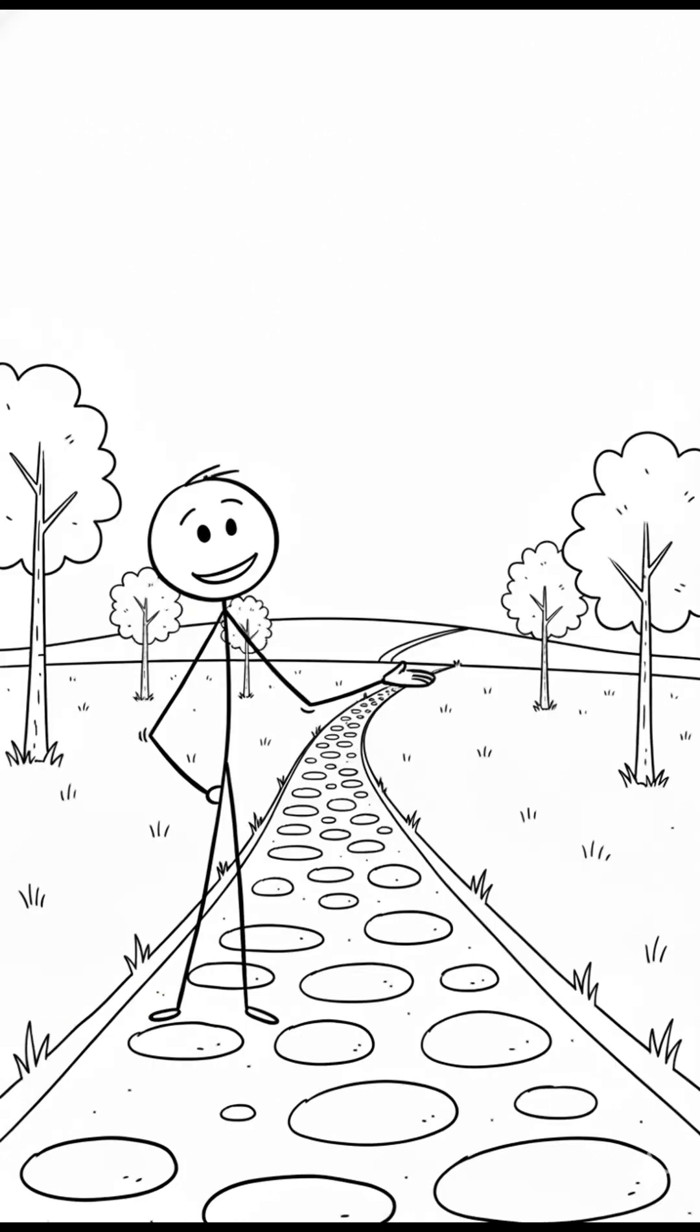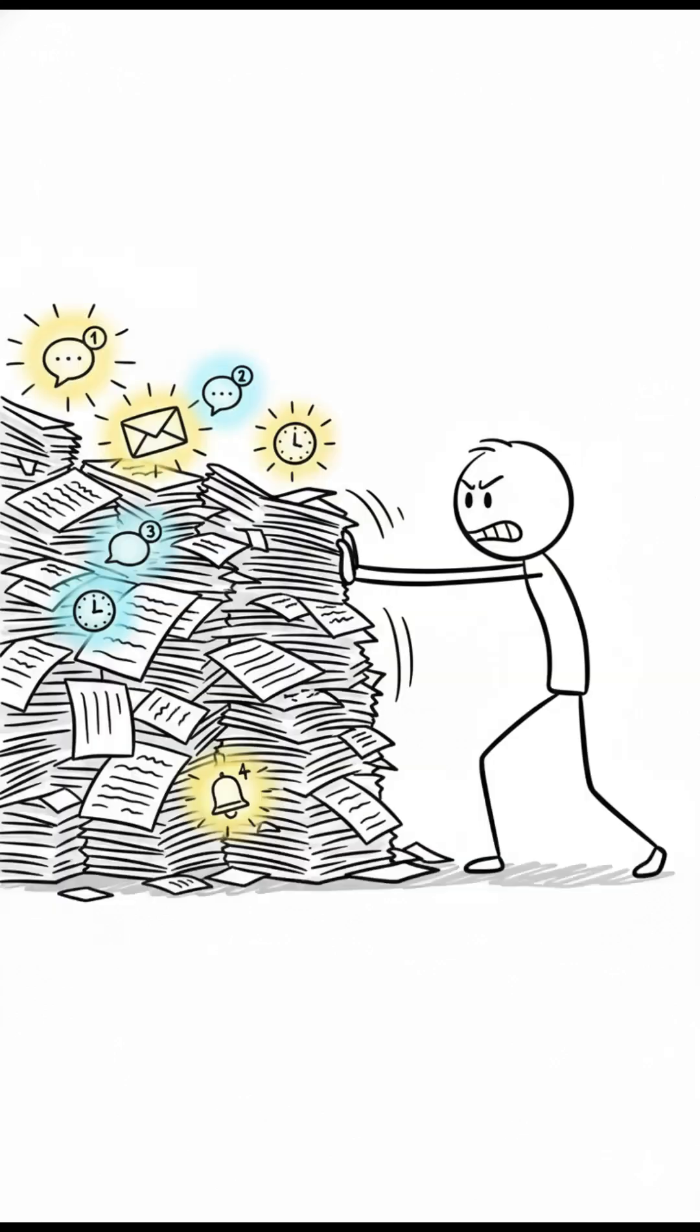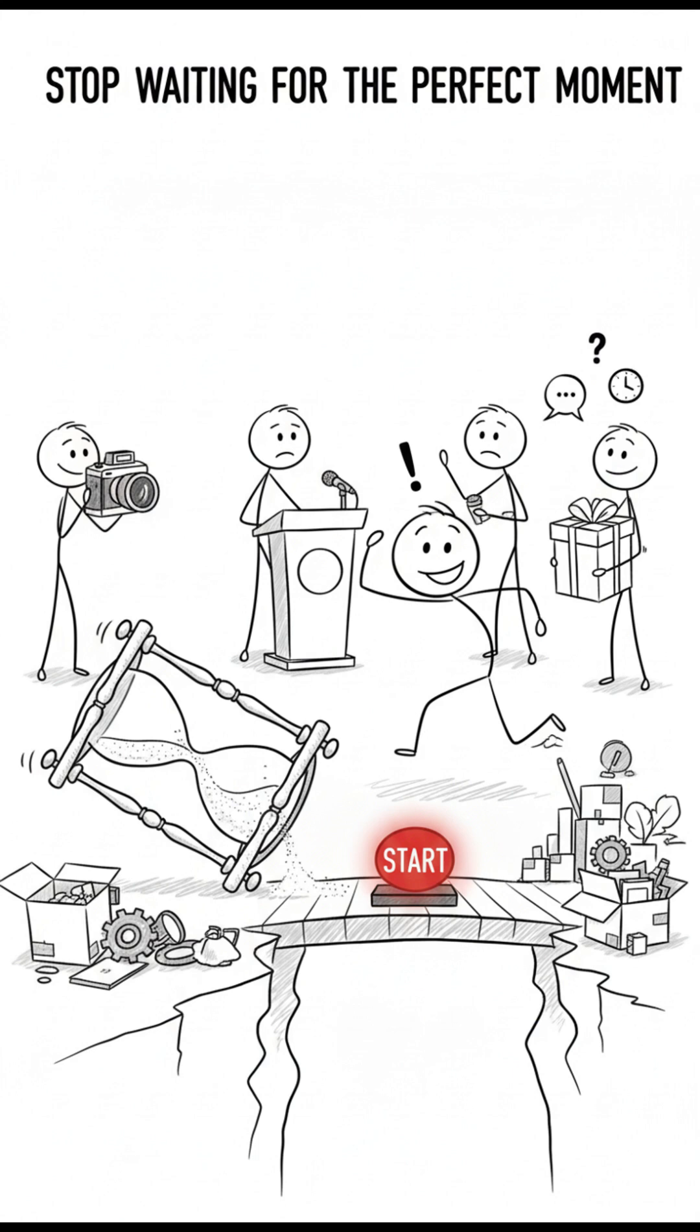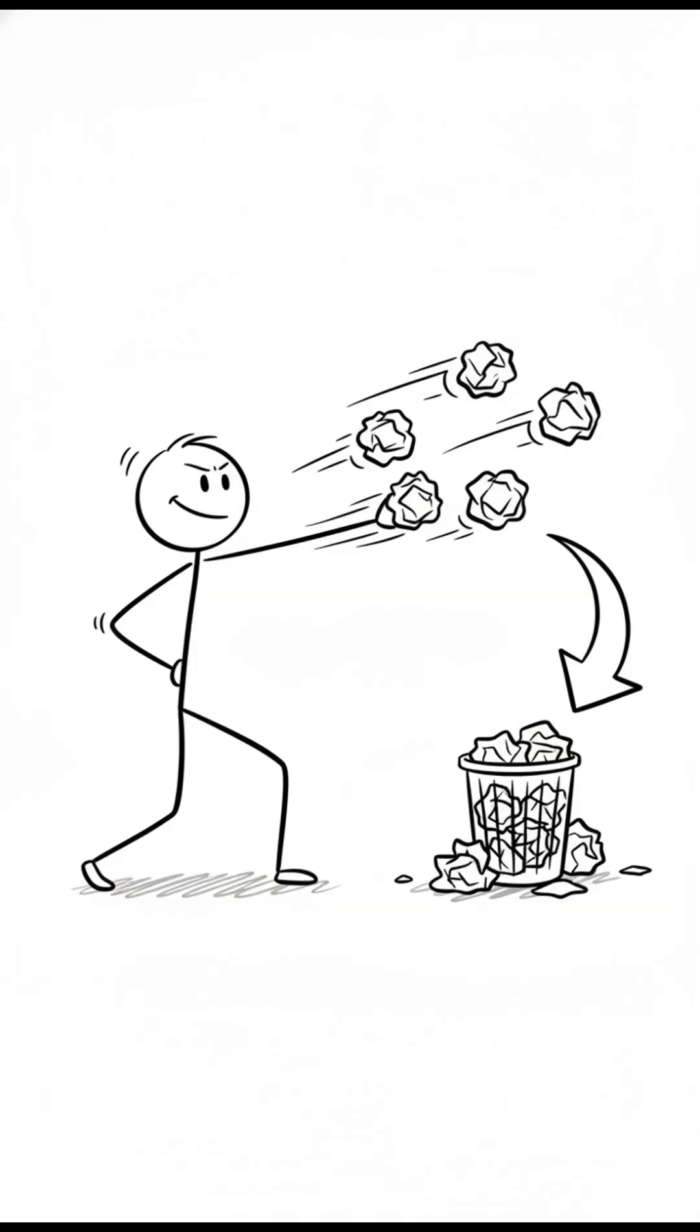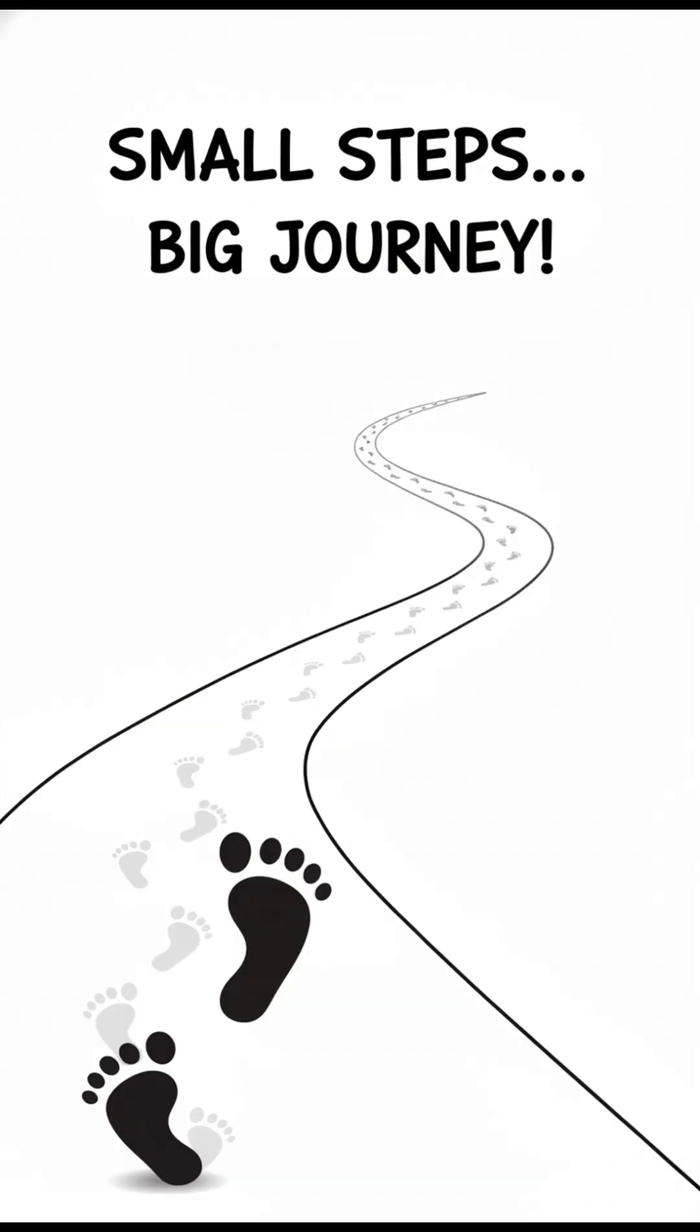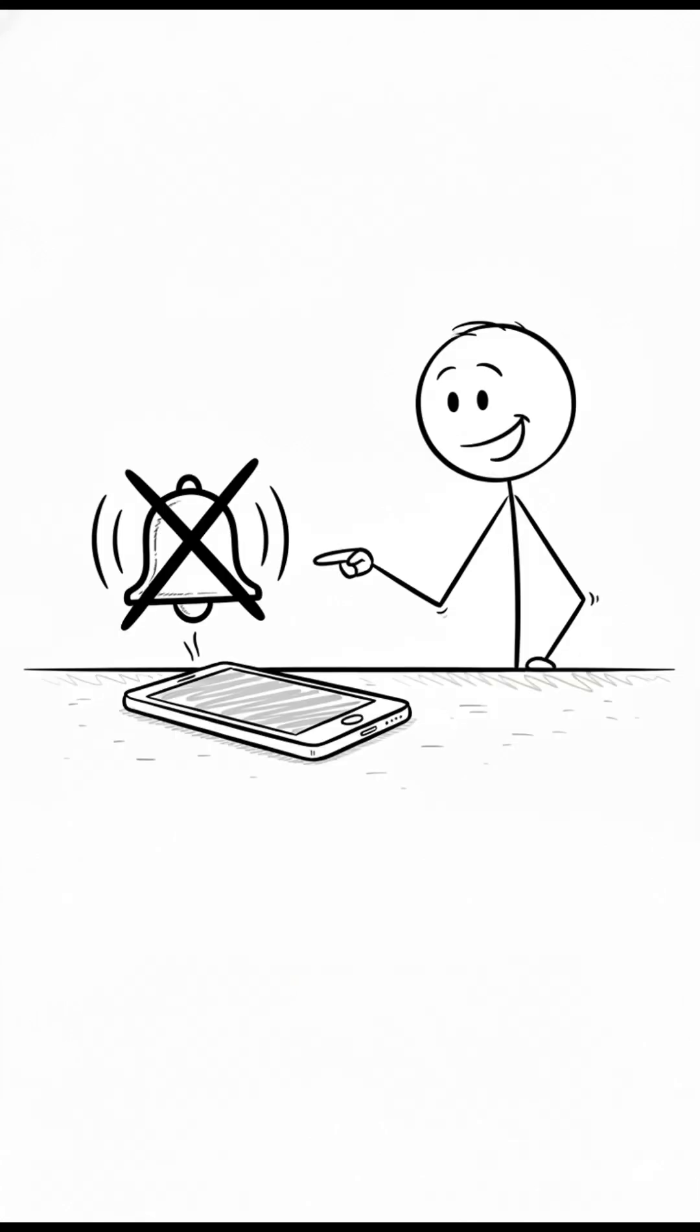So if you want to unlock your inner genius, stop overwhelming yourself. Stop waiting for the perfect moment. And stop fearing mistakes. Pick something meaningful. Break it into steps. Focus on one step at a time. And eliminate all distractions for 25 minutes.